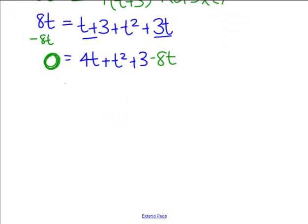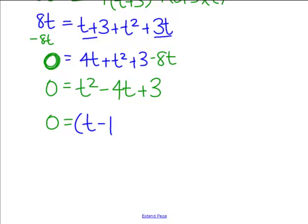And then we have some more like terms to combine. Zero now equals T squared minus 4T plus 3. So let's factor this so we can find out what T equals. I need two numbers that add to make negative 4 and multiply to make positive 3. Your two numbers should be negative 1 and negative 3.